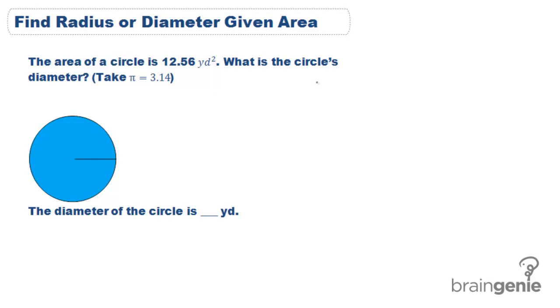Now we can also work backwards and given the area of a circle we can solve for the radius or the diameter. As a reminder, area is equal to pi r squared.